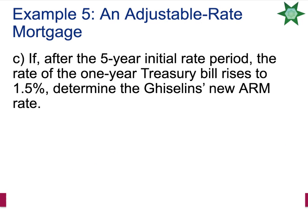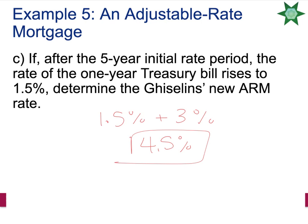Part C: If after the five-year initial rate period the one-year Treasury bill rate rises to 1.5%, determine the new ARM rate. The new ARM rate would be 1.5% plus the 3% add-on, so they would now be up to a 4.5% rate.